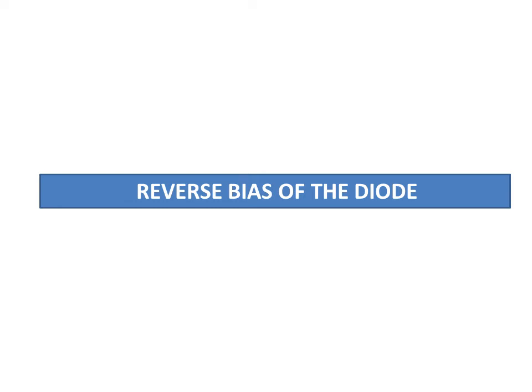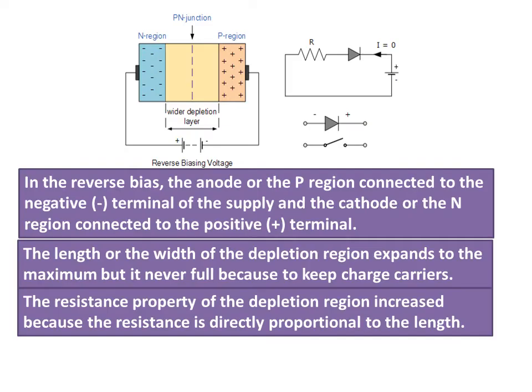In the reverse bias of the diode, the anode or the P region is connected to the negative terminal of the supply, and the cathode or the N region is connected to the positive terminal.